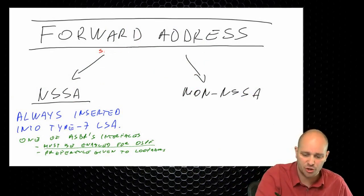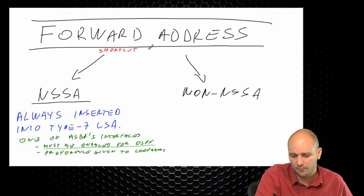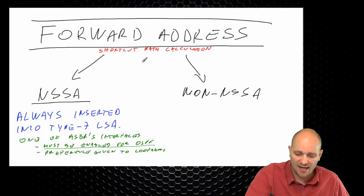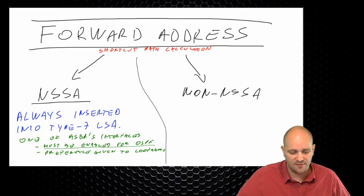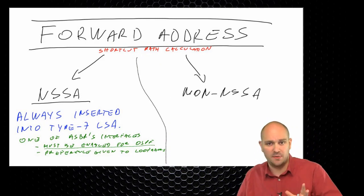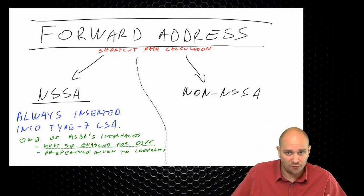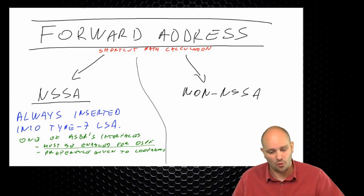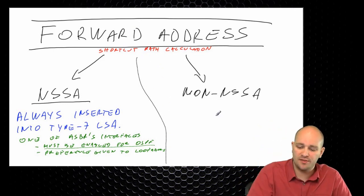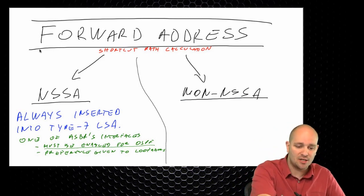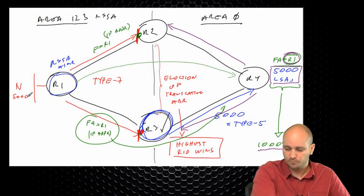The forward address allows a shortcut path calculation. When you have an NSSA area, the rule is simple: the forward address will always be inserted, it will be one of the ASBR's interfaces, and that interface must be enabled for OSPF. When dealing with a non-NSSA area, the situation is slightly different.